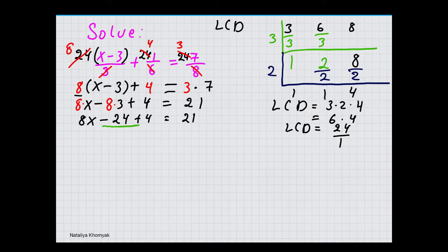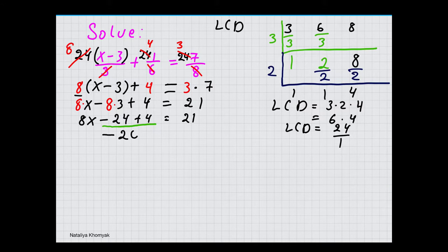We have like terms: negative 24 and 4. Different signs, so we are going to calculate the difference. We have more negatives, so the difference will be negative. 24 minus 4 gives us 20. Keep everything else as is: 8x minus 20 equals 21.